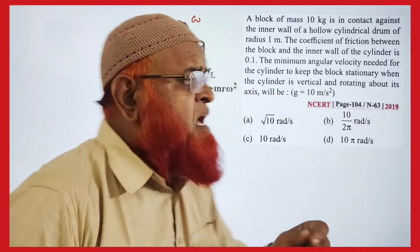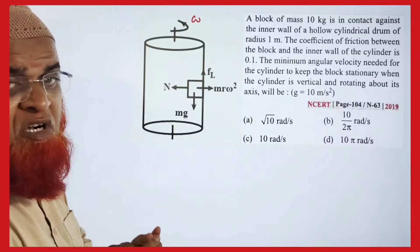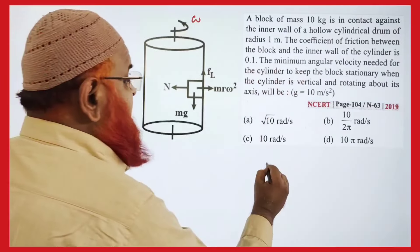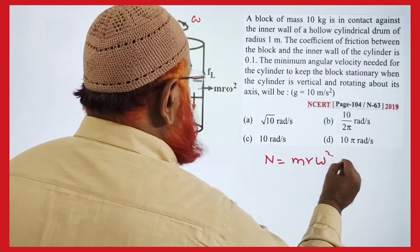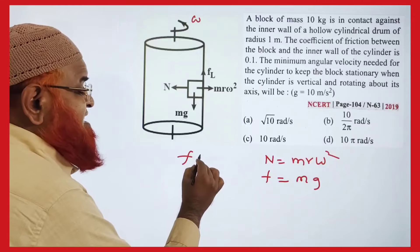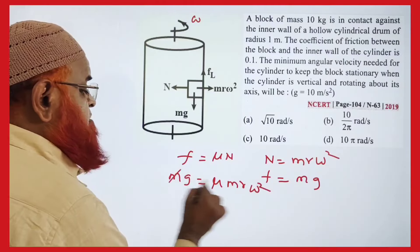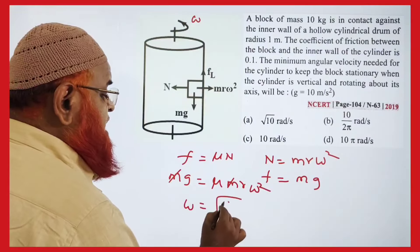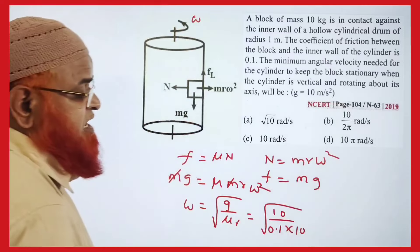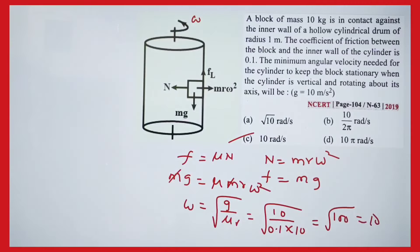This is a 2019 previous year question: a rotating drum with a block fixed inside. Normal reaction equals mr×omega². Friction upward equals mg. Setting mu×mr×omega² = mg, masses cancel, giving omega = √(g / mu×r) = √(10 / 0.1×10) = √100 = 10 radians per second.